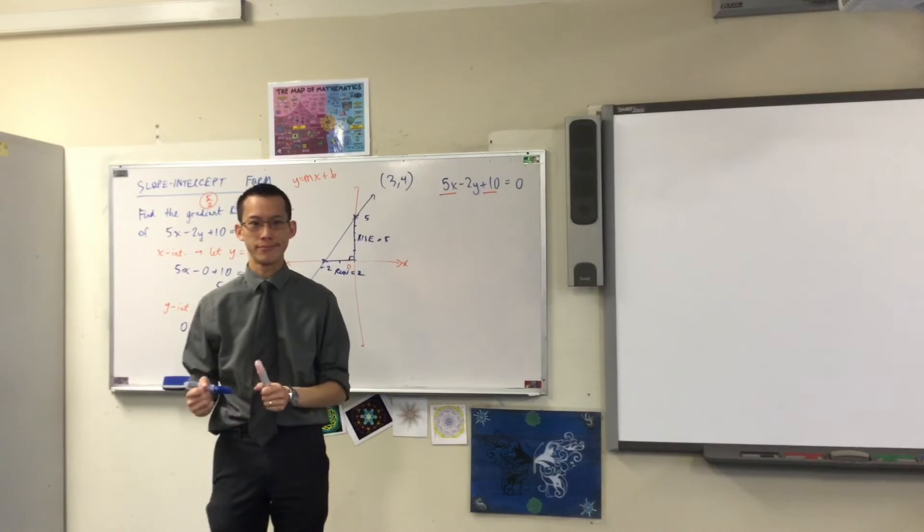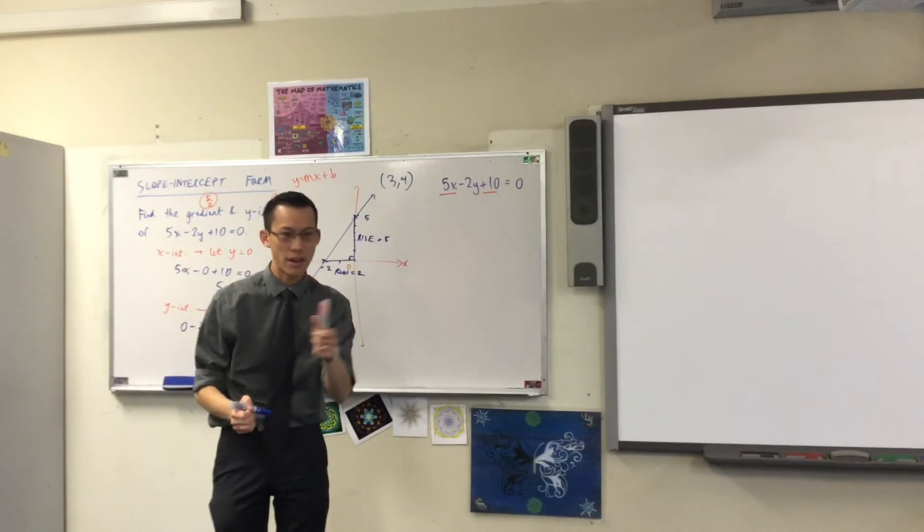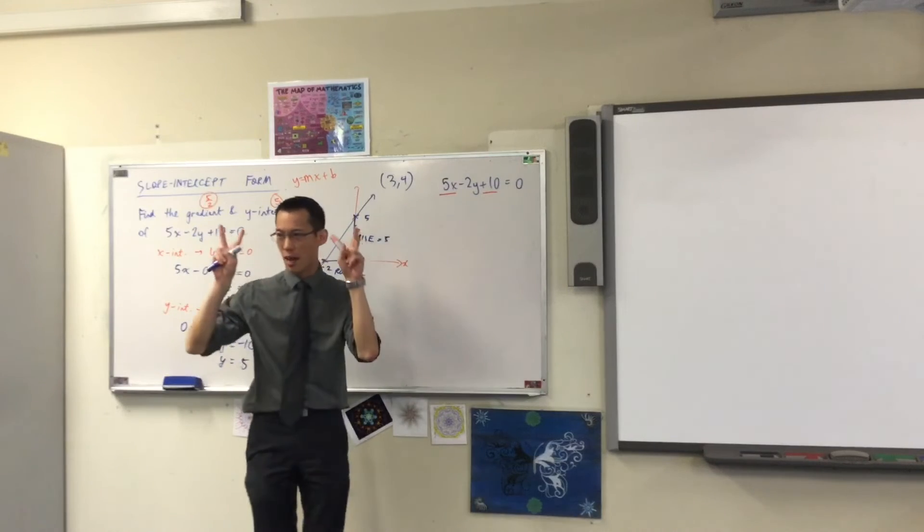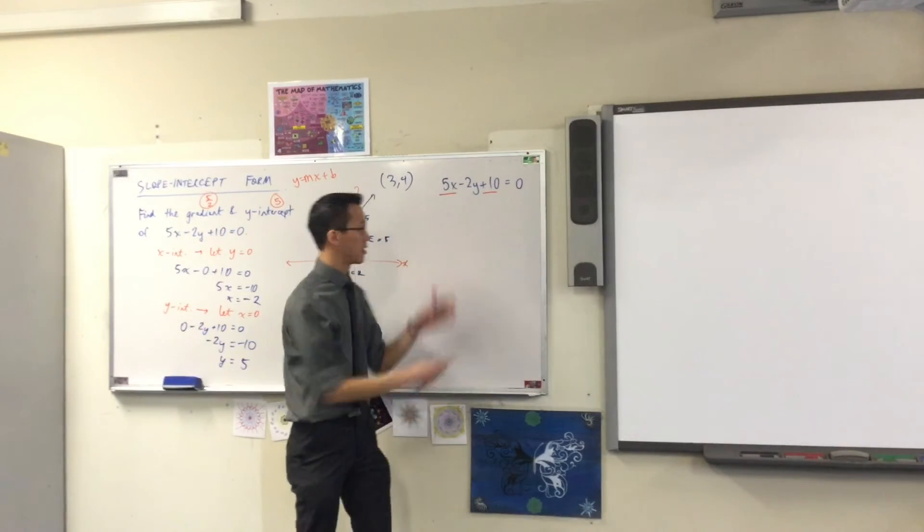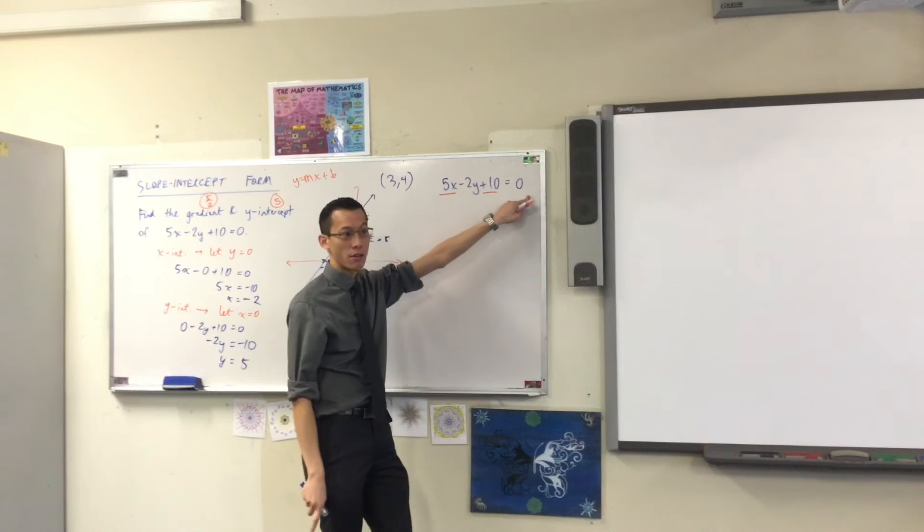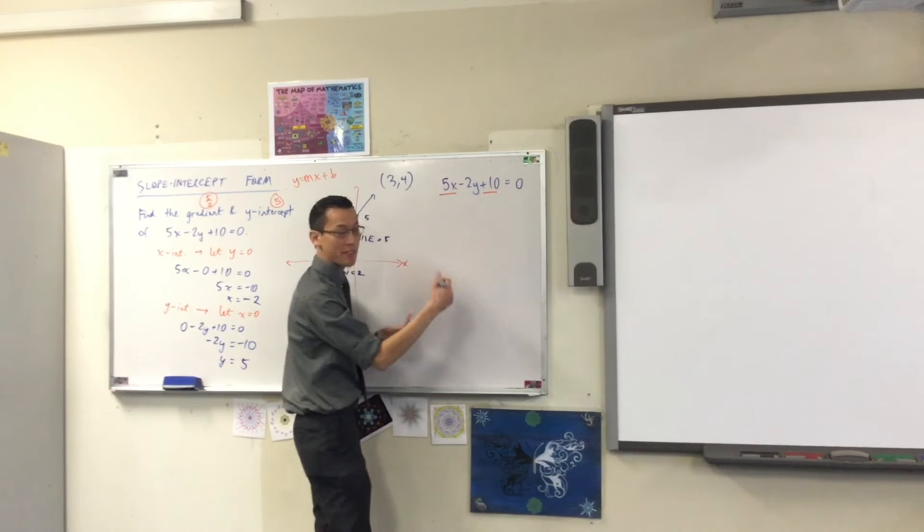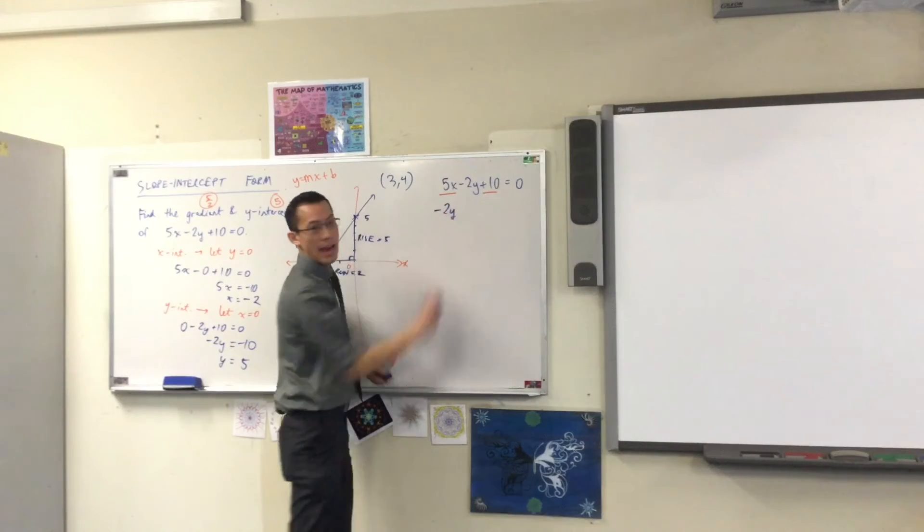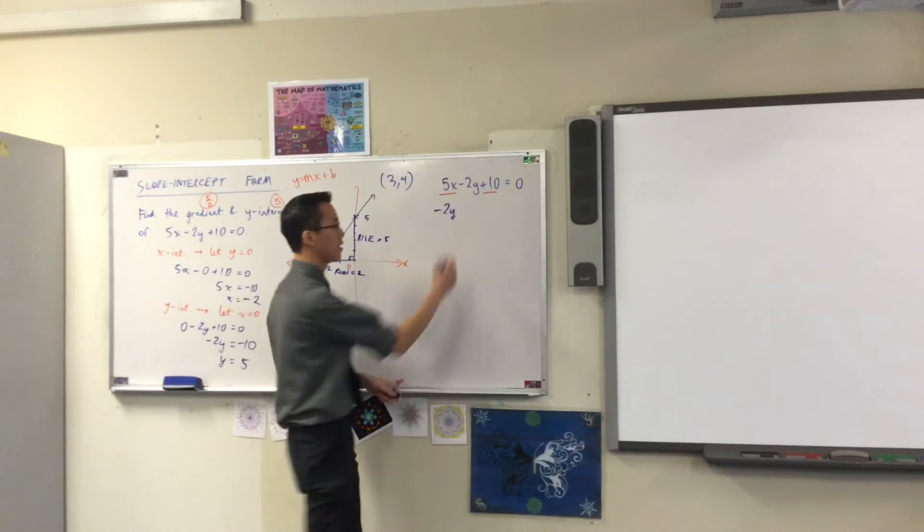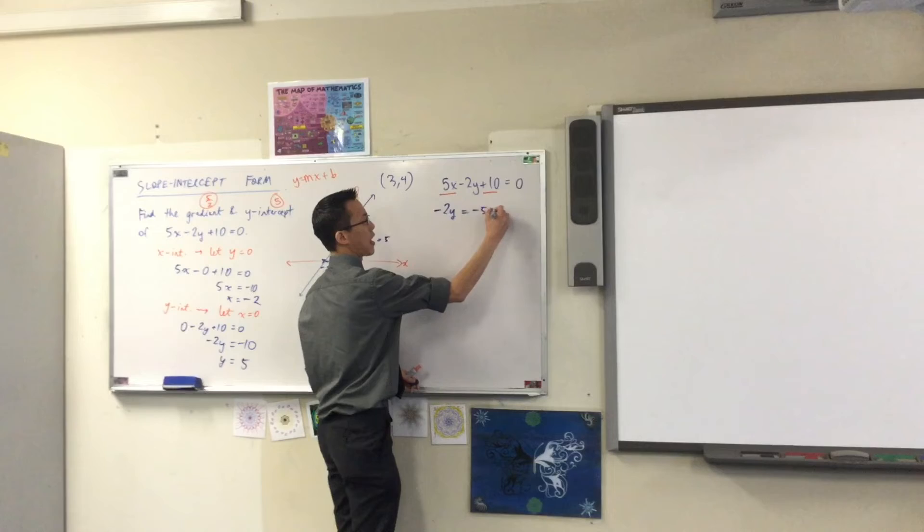Yeah, there's a 5x minus 10. So, what should I do to both sides? Minus 2y. I should subtract, right? I'm going to say this again. It's not just that I'm moving them over there because they're not going to be 5x plus 10 over there, are they? They're going to be minus 5x minus 10.